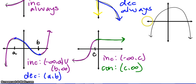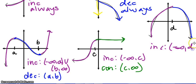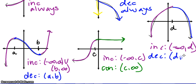Last one: as you read from left to right, your graph is going up, increasing until you get to about here. And then your graph switches — we're going down. We'll call that point D. So we'll go increasing from negative infinity to D, and decreasing from D to infinity.